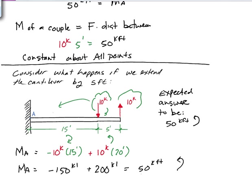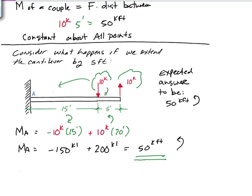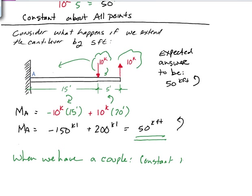And we always end up with the same value. So the final answer here is whenever we have a couple, it is constant moment about all points.